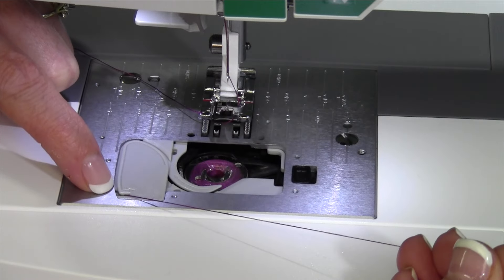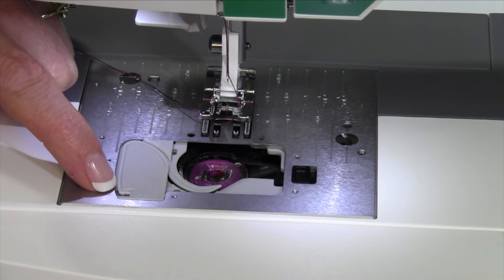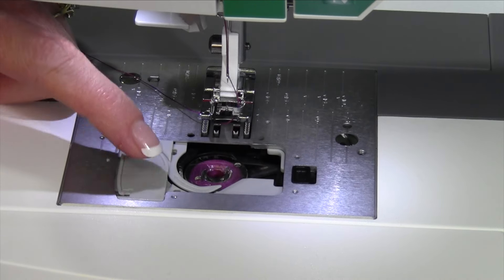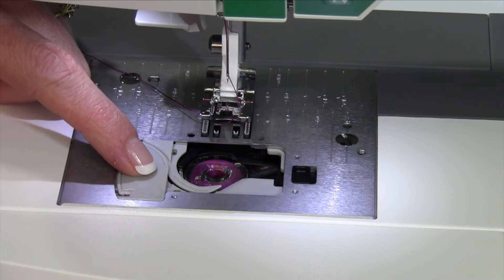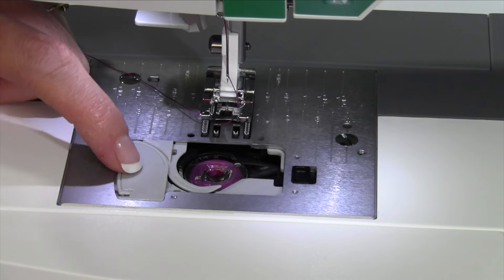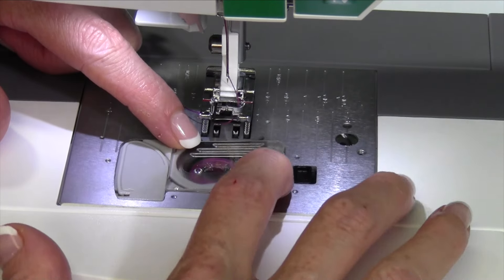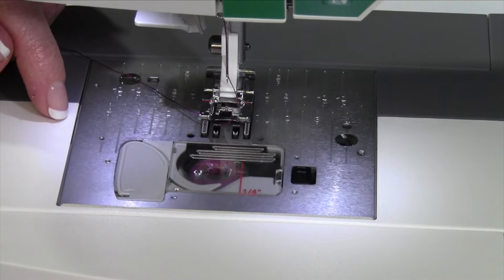because there's a little cutter down here. All you have to do is pull to the right. It cuts the length of thread to the perfect length. You do not have to bring this bobbin thread up for you to start sewing. As soon as your needle is threaded, you can just start sewing and the bobbin thread will come up. Replace the door and you're ready to sew.